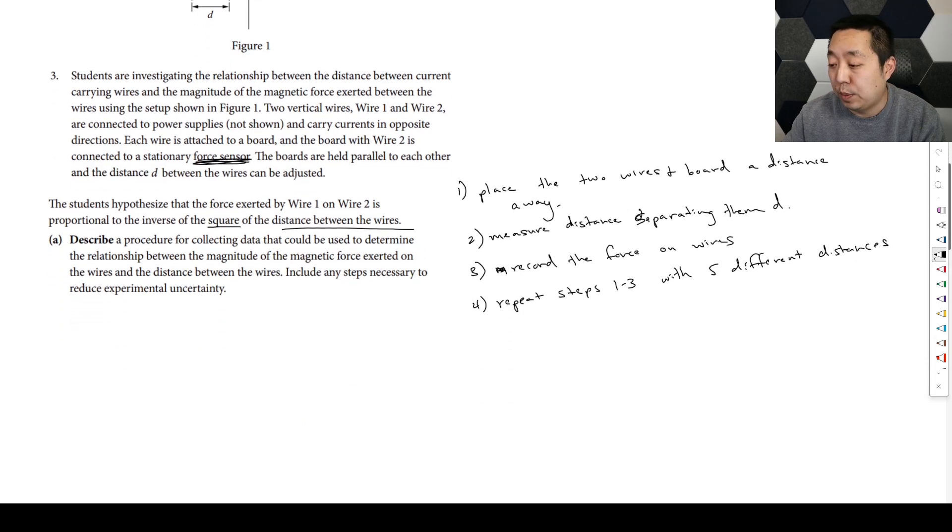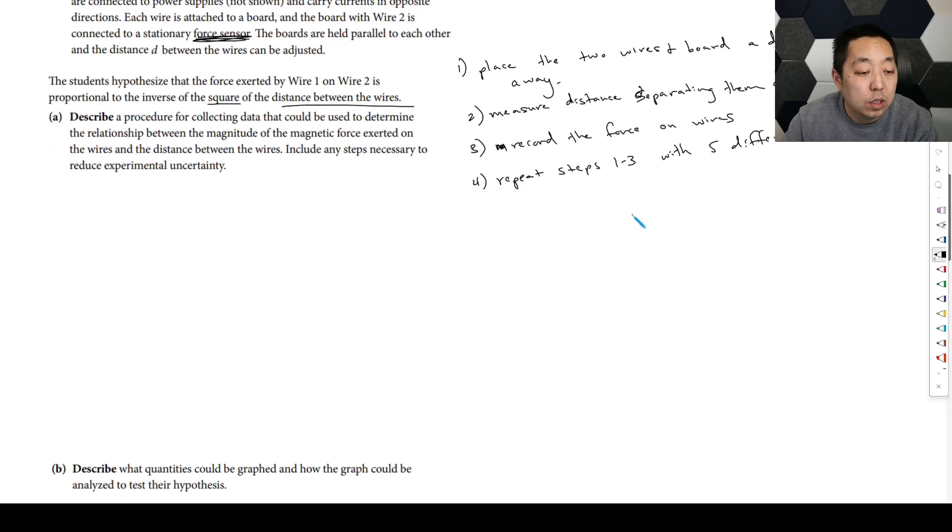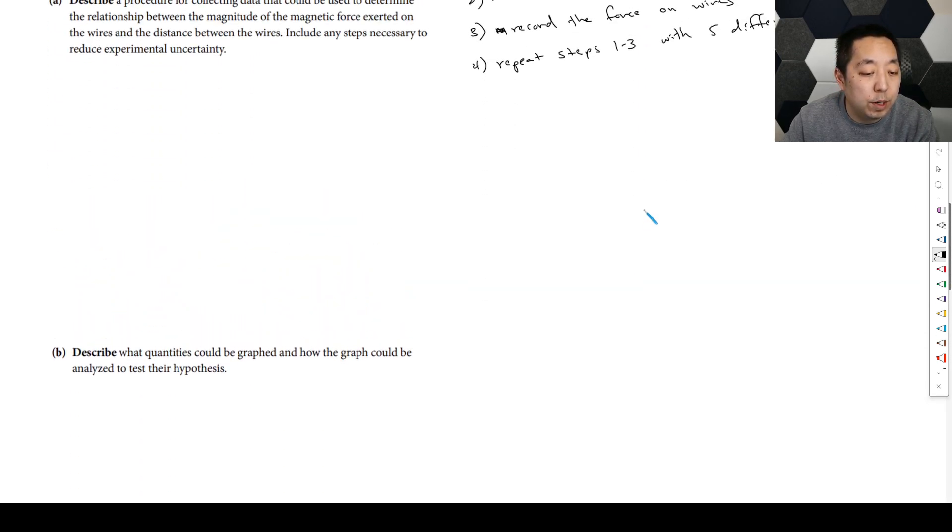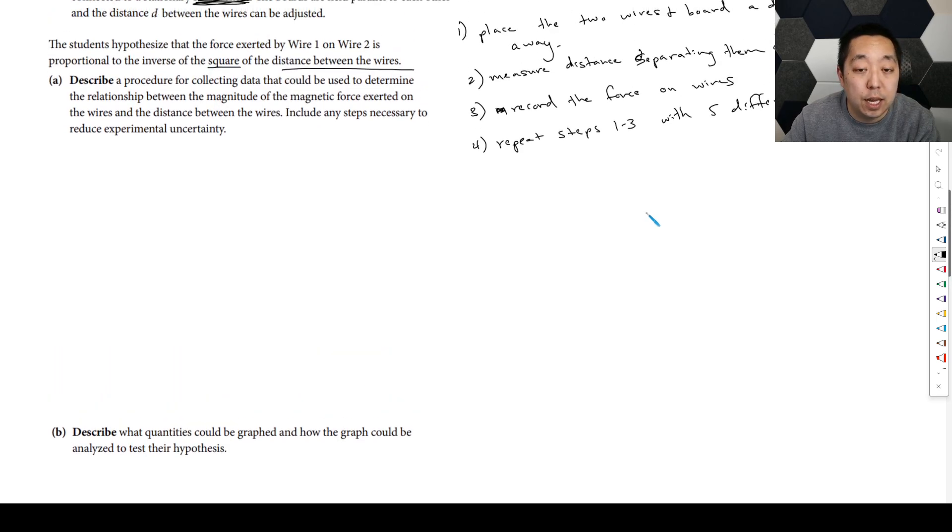So that will reduce the experimental uncertainty there, right? So that will take care of the experimental uncertainty portion of that. Describe what quantities could be graphed and how the graph could be analyzed to test the hypothesis. Well, so now if we're just going to say it's inverse to the square of the distance, right? So what they're saying is that they want to say the force is proportional to the inverse of the square of the distance here. In other words, they think the force is equal to K times one over D squared, right? Some constant here.